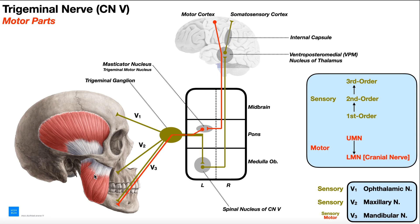What we want to understand here is the motor pathway for the trigeminal nerve. As opposed to the sensory pathways, which go from the face and head up to the somatosensory cortex, the motor pathway goes in the opposite direction — it begins at the motor cortex and goes down through the brainstem out to the muscles in the periphery. Another major difference is that the sensory components use a three-neuron system, whereas the motor component is a two-neuron system: an upper motor neuron and a lower motor neuron. The lower motor neuron is essentially what we call the cranial nerve.